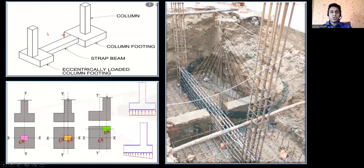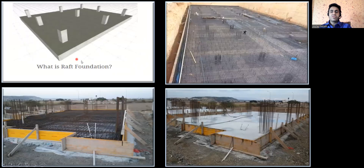Practically, you can see here: this was one column which is at the extreme corner, and this is another footing where the column is exactly at the center. This is a strap beam — whatever unbalanced moment we have, it will get transferred through this beam and then transferred to the central footing. And this is your mat foundation — you can see a big foundation, and over that there are multiple columns: one, two, three, four, five. A mat foundation has multiple columns over one base — that is how practically your mat or raft foundation looks.